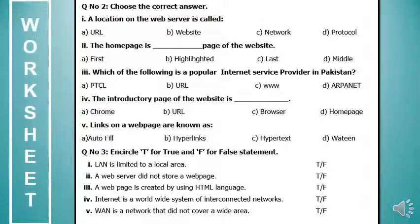Question 2 of the worksheet — choose the correct answer: a location on the web server is called a website; the homepage is the first page of a website; a popular internet service provider in Pakistan is PTCL; the introductory page of the website is the homepage; links on a webpage are known as hyperlinks.